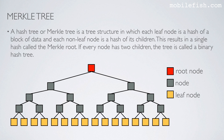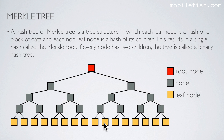This results in a single hash called the Merkle root. If every node has two children, the tree is called a binary hash tree. These are all nodes. The top node is called the root node. The bottom nodes with no children are called leaf nodes. All nodes contain hashed values. Only leaf nodes have no children.